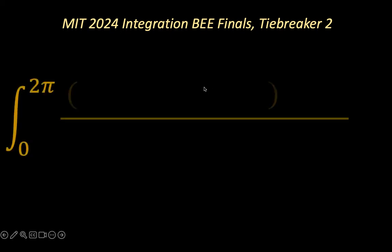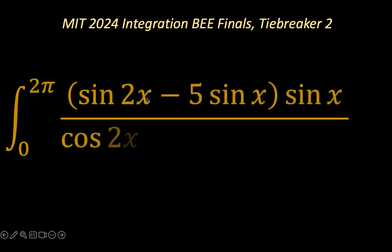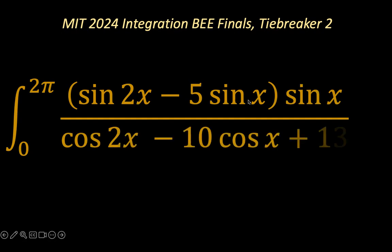The problem is the integral from x = 0 to x = 2π of sine(x) · [2x − 5 sin(x)], all in brackets, times sin(x) over cos(2x) − 10 cos(x) + 13.